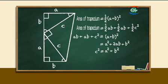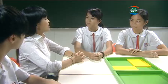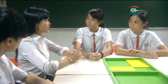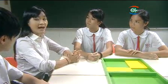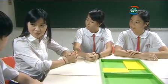This proof was made by President James Garfield, the 20th President of the United States, in 1876. The ancient Greeks discovered the relation among the three sides of a right angled triangle as early as 2500 BC.